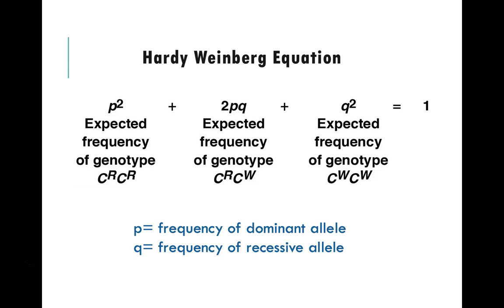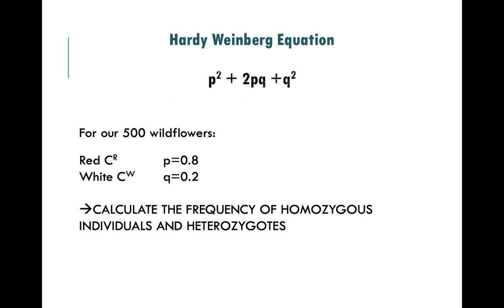So let's take our p value and our q value from our previous example. We calculated that out of 500 wildflowers, we have a p value, or the red allele value, of 0.8, and we have a q value, or the white allele value, of 0.2. If you don't remember how you did that, you probably need to go back and watch the other video again. If you do, then let's continue on.